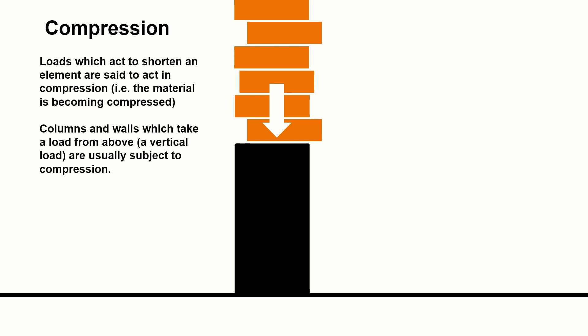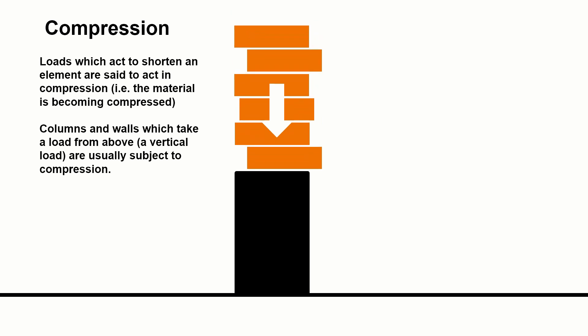The opposite of tension is compression. This is when a load placed on a particular element will act to shorten it. The weight of the bricks sitting on the column here or the wall will push it down. So the material becomes compressed.